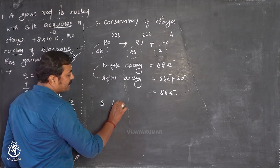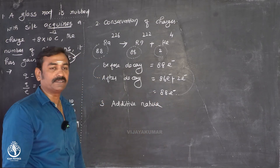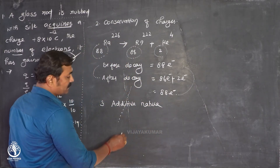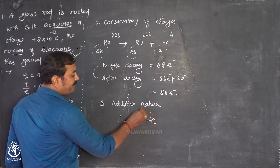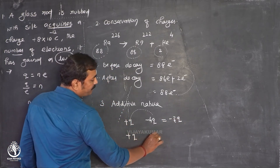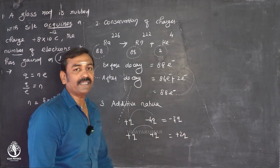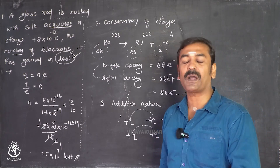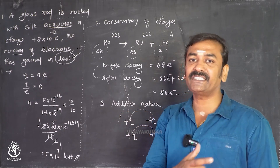The third property is the additive nature of charges — we can add charges algebraically. For example, plus Q and minus 4Q give minus 3Q when added. Plus Q and plus Q give plus 2Q. So the three properties of charges are: quantization of charges, conservation of charges, and additive nature of charges.